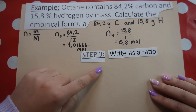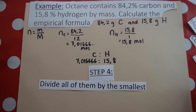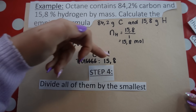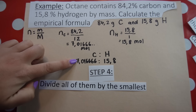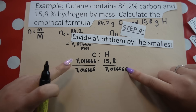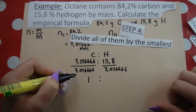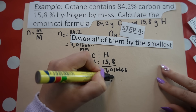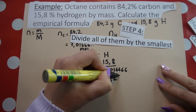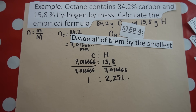Step three: write the moles as a ratio. Step four: divide both by the smallest, which is 7.016 recurring. For carbon, dividing by itself gives 1. For hydrogen, we get 2.251 and so on.